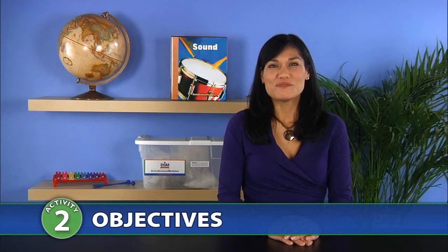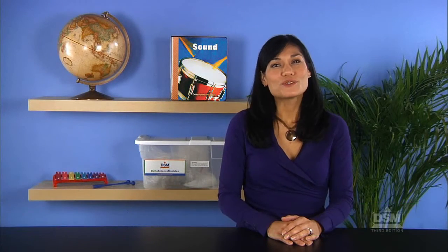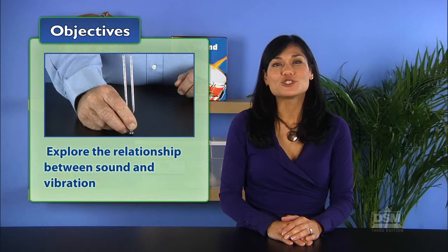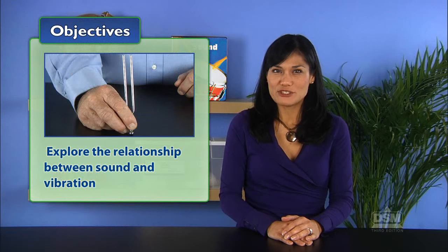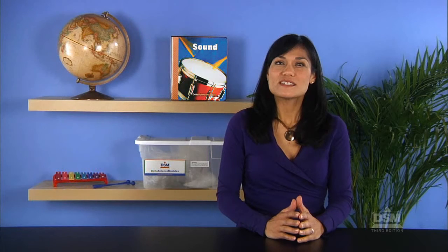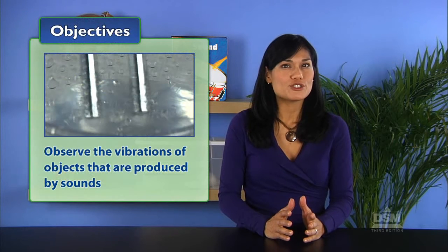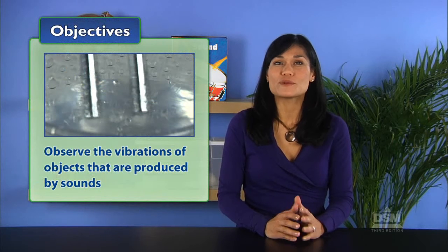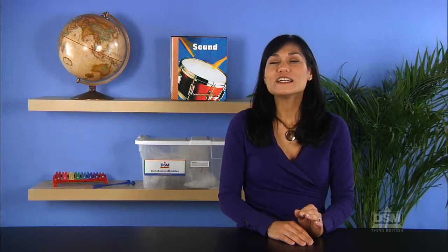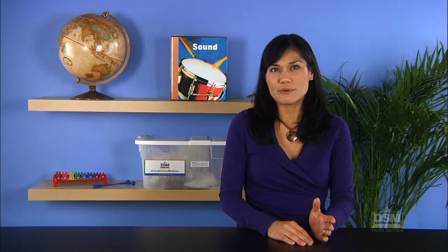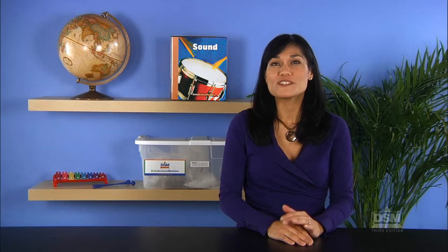In Activity 2, Good Vibrations, students use a tuning fork to explore the relationship between sound and vibration. They first listen to sounds and then observe the vibrations of objects as they produce those sounds. Students finally infer that when applied energy makes an object vibrate, its vibrations produce sound.